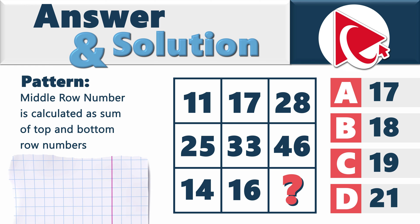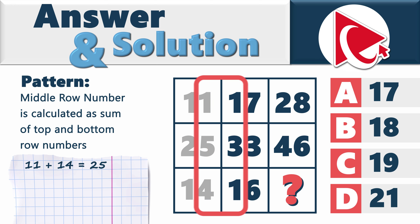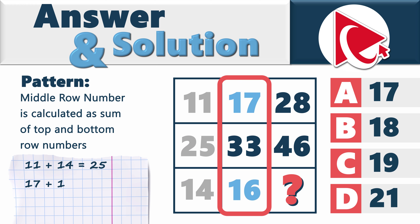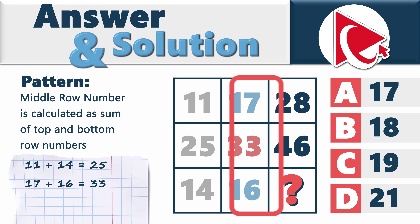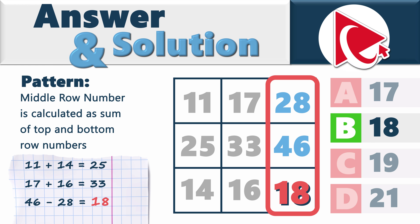The actual pattern is that the middle row number is calculated as the sum of the top and bottom row numbers. In the first column: 11 + 14 = 25. In the second column: 17 + 16 = 33. So to calculate the missing number: 46 − 28 = 18. The correct answer is Choice B, 18.